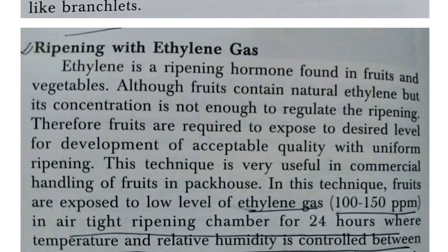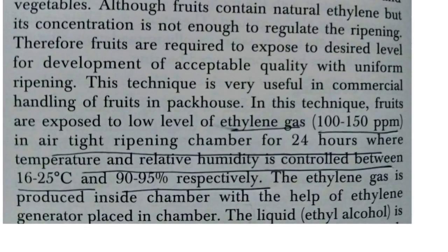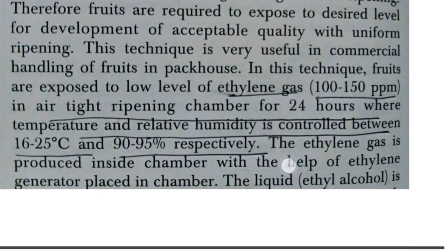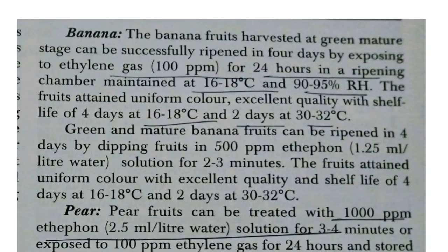Ethylene is considered a ripening hormone and is used in specific doses. The general dose is 100 to 150 ppm for about 24 hours at a temperature range of 16 to 25°C and relative humidity of 90 to 95%. The method of applying ethylene for fruit ripening is called the trickle method. For banana, the ethylene dose is about 100 ppm at 16 to 18°C with 90 to 95% relative humidity for 4 days, or 2 days if temperature is 30 to 32°C.